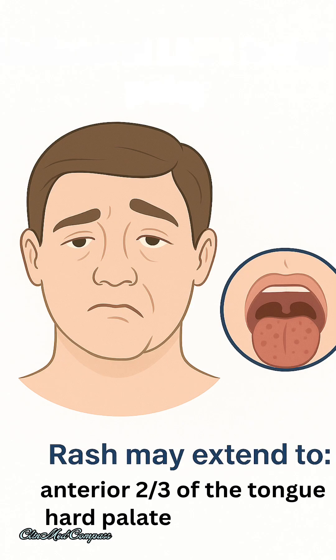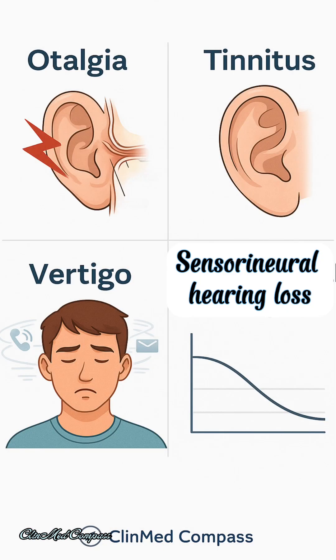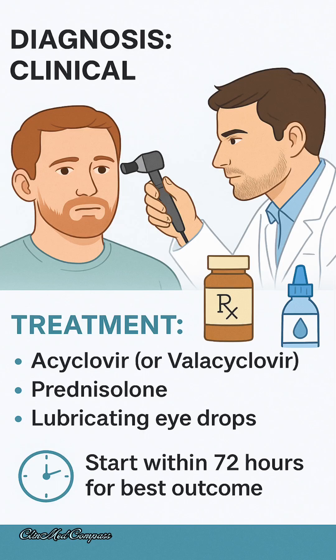The rash may also extend to the anterior two-thirds of the tongue and the hard palate. Other symptoms may include otalgia, tinnitus, vertigo, and sensorineural hearing loss. Diagnosis is primarily clinical.